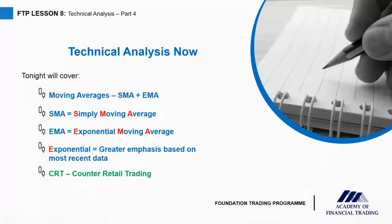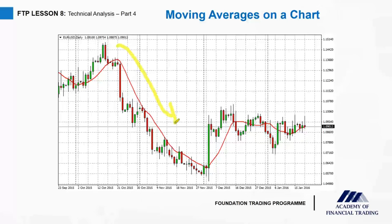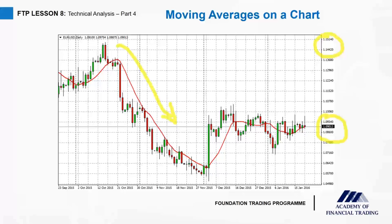On the screen we've got a euro-dollar daily chart. We can see that the market has been falling from left to right, with the euro-dollar declining from around the 1.15 level down to the 1.08–1.09 level. The euro has been depreciating and falling dramatically, as you can see from the chart.